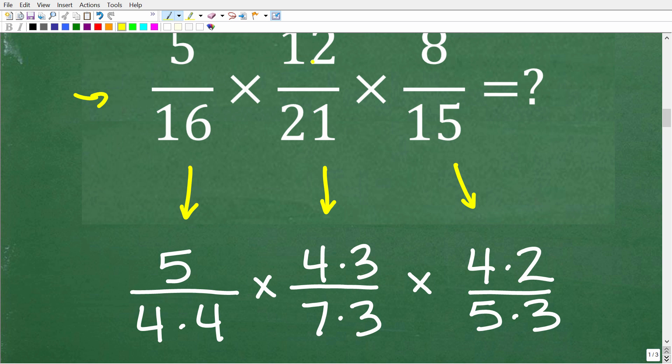So 12 over 21, I'm going to think of this 12 as 4 times 3 and 21 as 7 times 3. Now again, these are all factors of these numbers. And then here 8, I'm going to think of this as 4 times 2, and then 15 I'm going to think of this as 5 times 3.